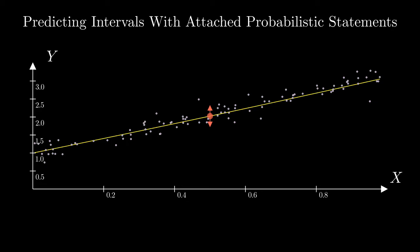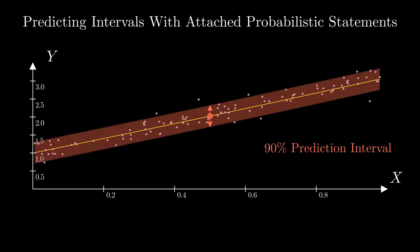We then assign a probability to this interval, indicating the likelihood of the true value falling within it. For instance, we might confidently state that there is at least a 90 percent probability that the true label lies within our predicted interval. This is often called a 90 percent prediction interval.